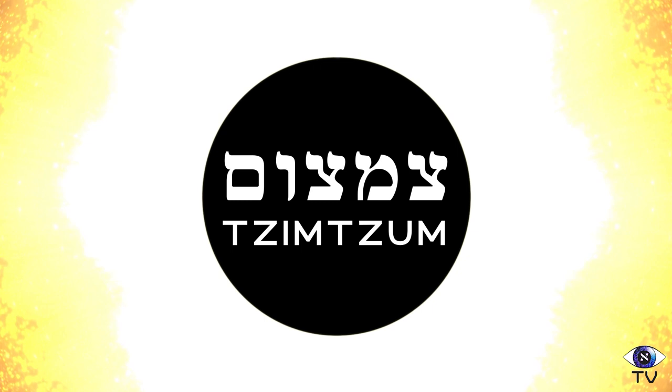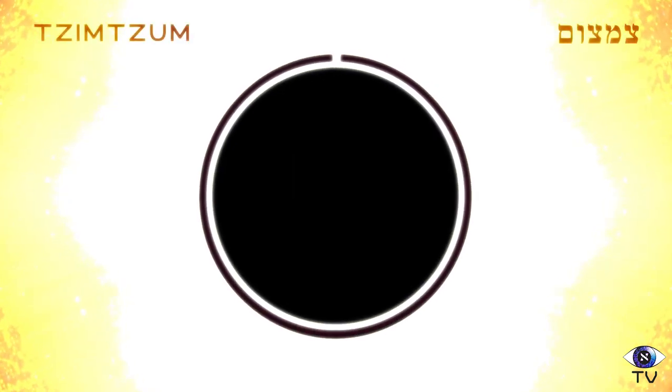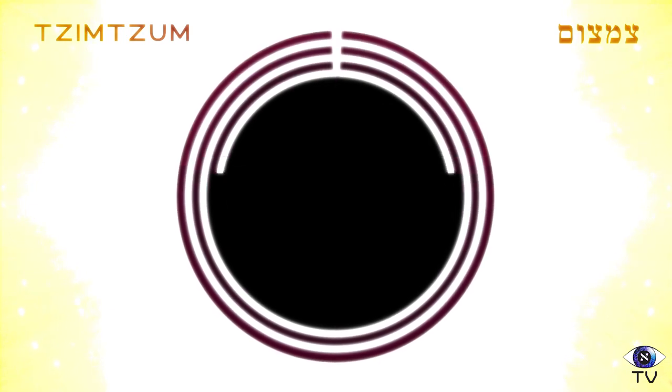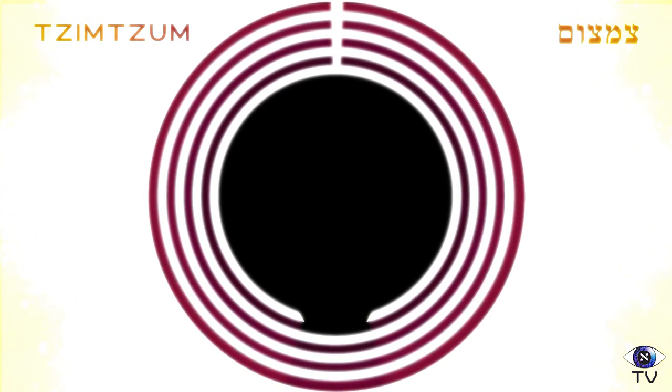This process of contraction is called Tzimtzum. He then allows his infinite light to re-enter the void in a controlled form and repeats this process many times, getting progressively less potent.